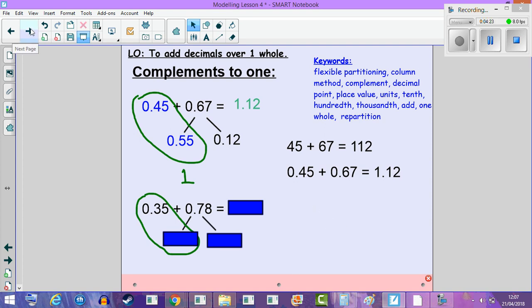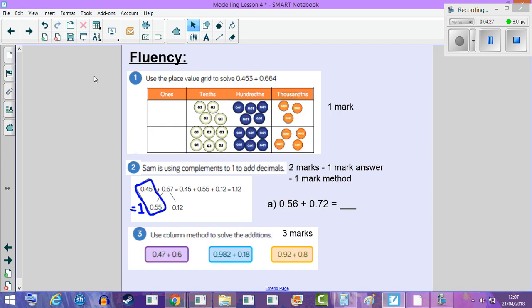Let's go on to reasoning and problem solving. Sorry, fluency. We have used the place value grid to solve 0.453 and 0.664, so we need to make sure we're repartitioning very accurately starting from the right-hand side.